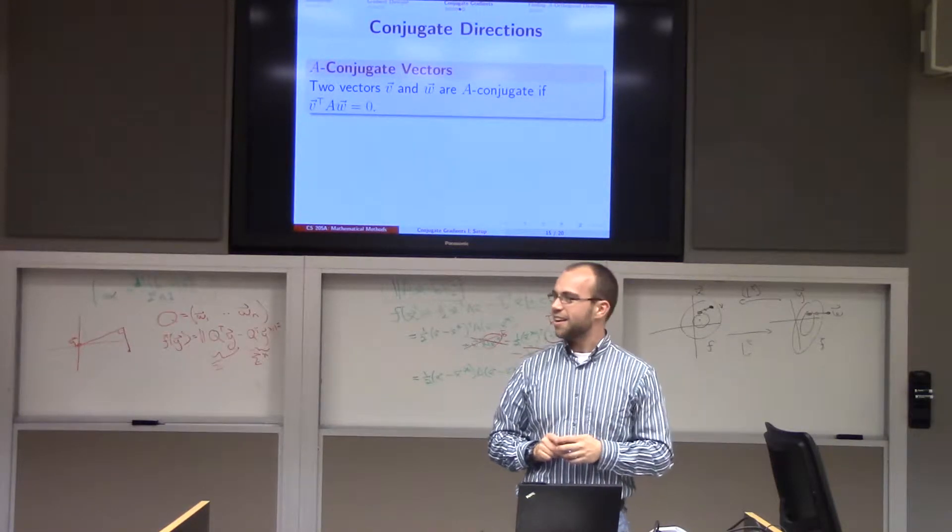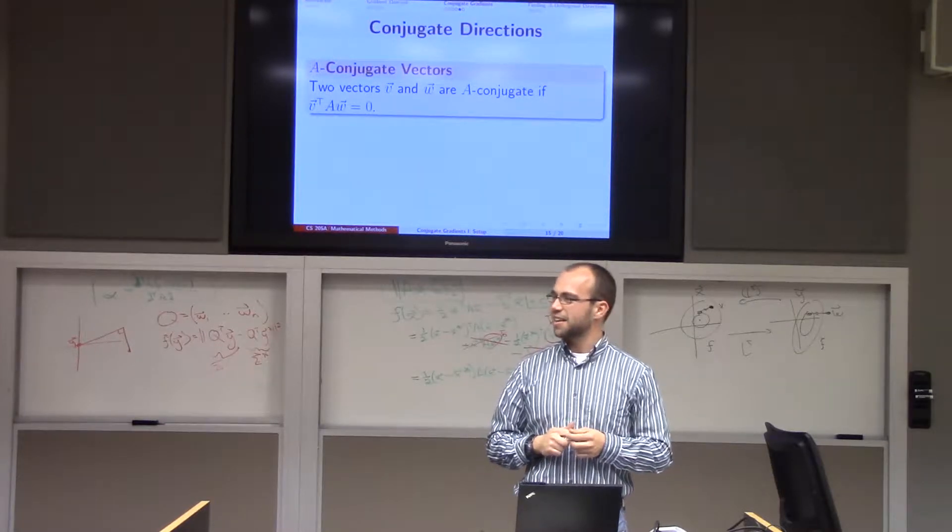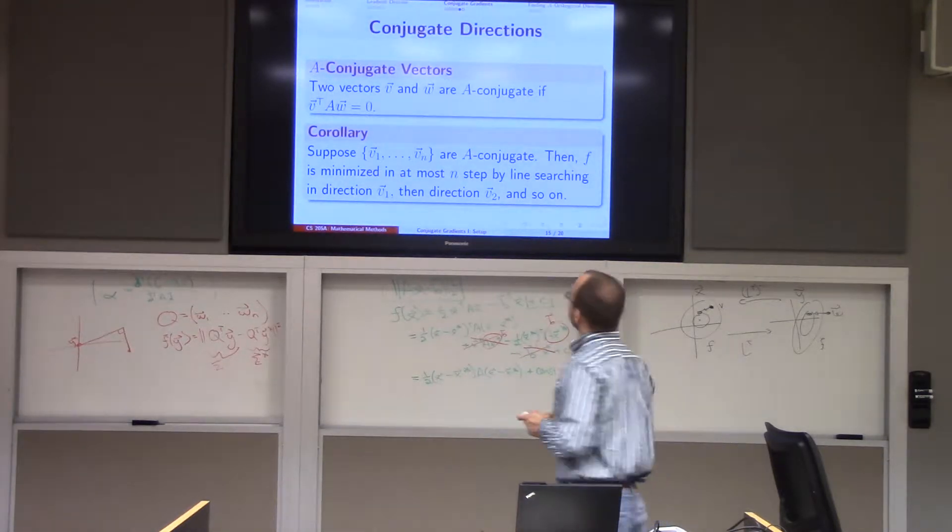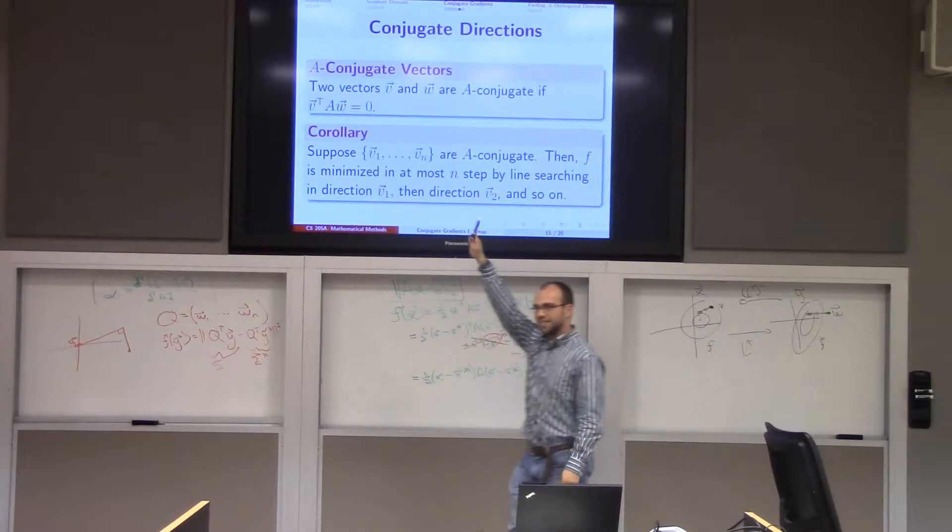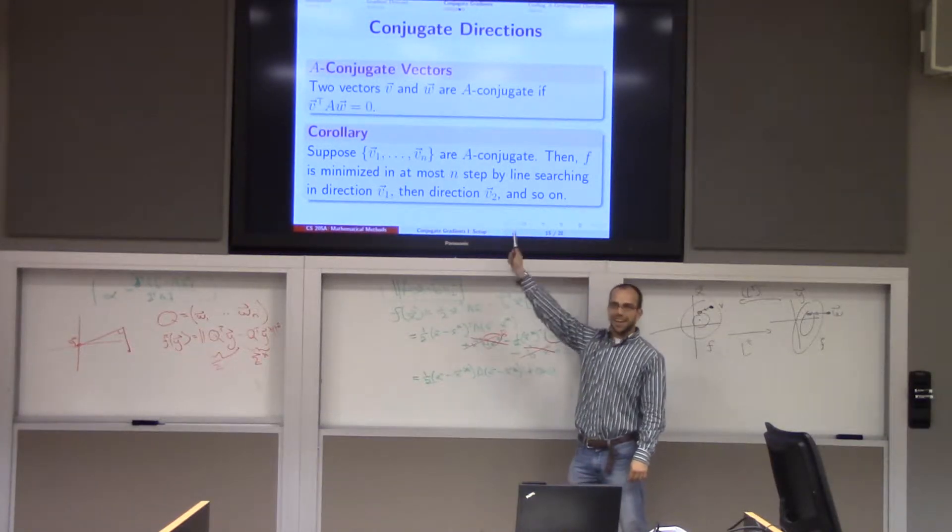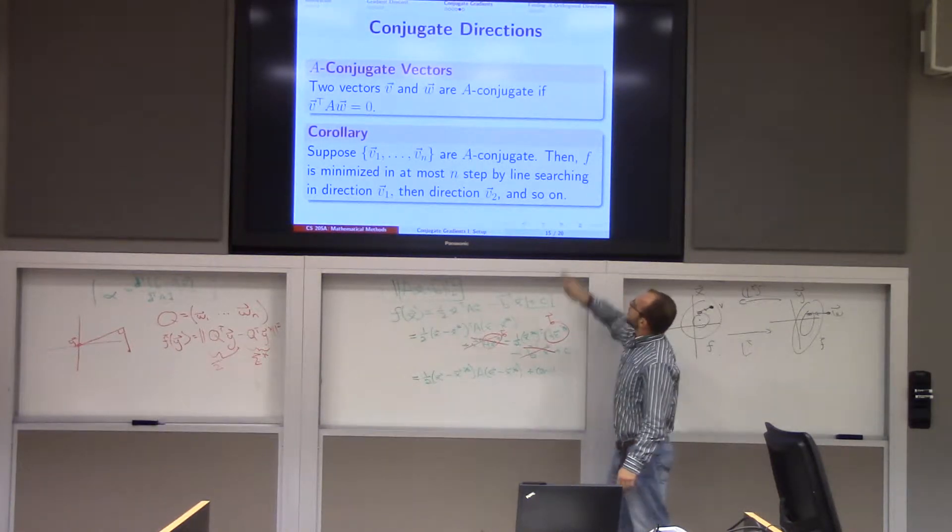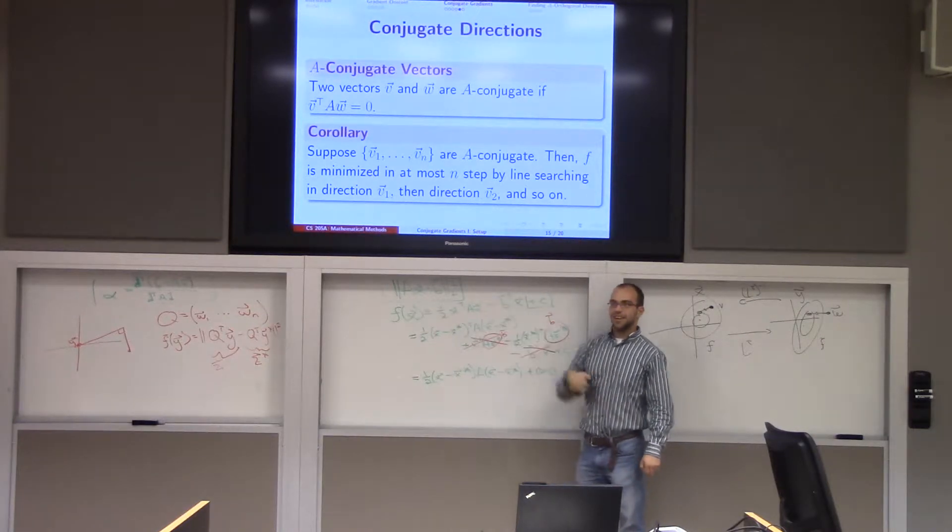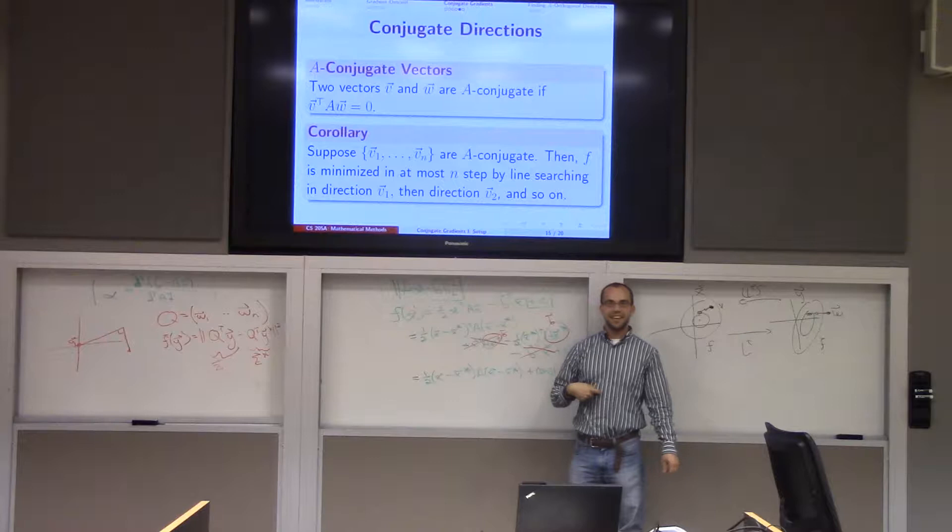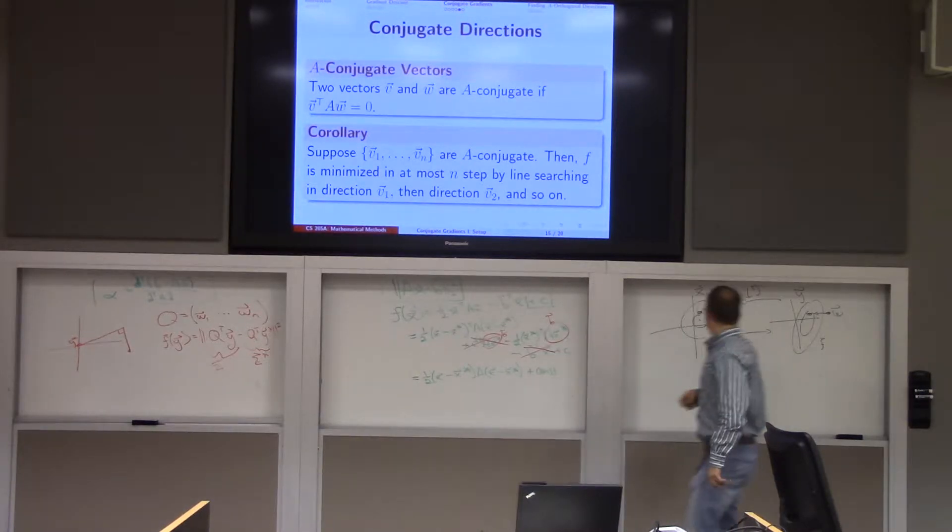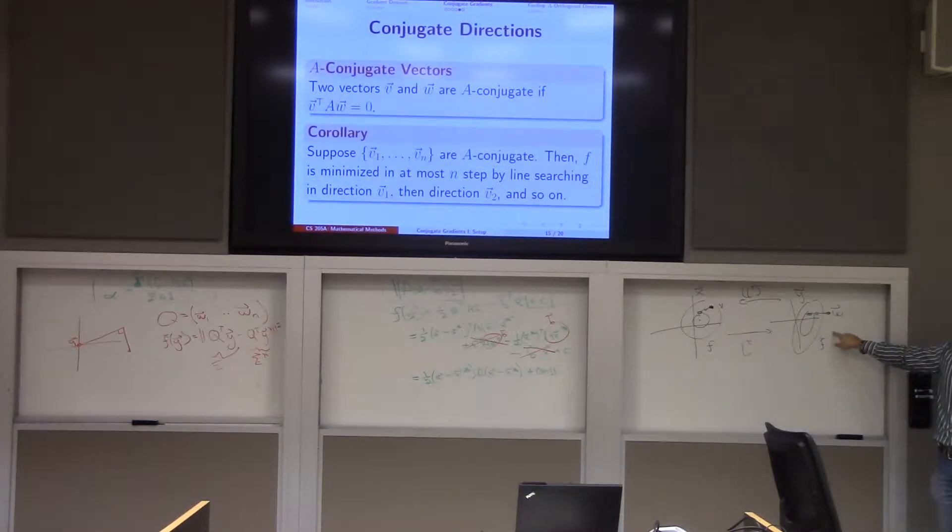So in particular, what happens if I have n A-conjugate vectors and I line search along just from one to the next? Well, I claim to you that if I take n vectors v which are A-conjugate, so v_i transpose times A times v_j for i not equal to j is equal to zero, then if I line search our original function f along these A-conjugate directions, then in n steps I have to hit the minimum. Does this make sense? Because secretly, what's going on is in this replicated space where life is easy and matrices are well-conditioned, and it starts already moving in n orthogonal directions, and we prove that this guy converges.